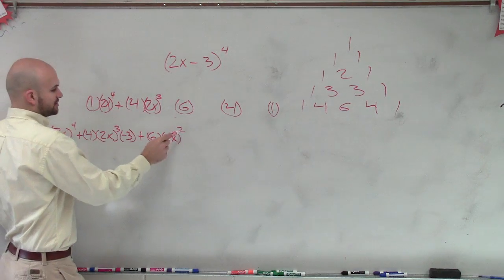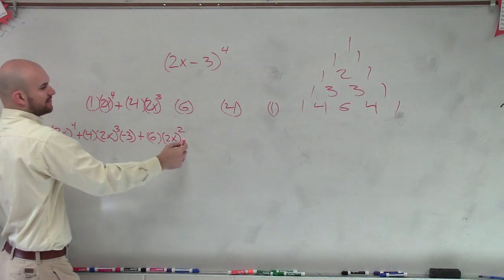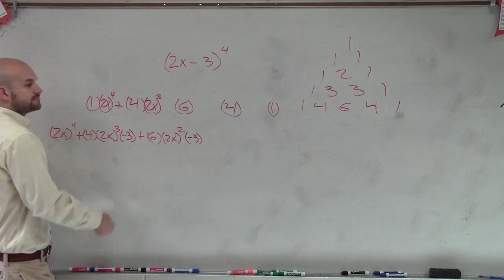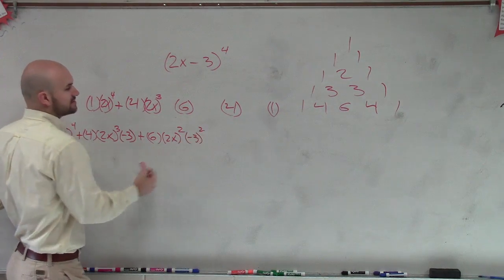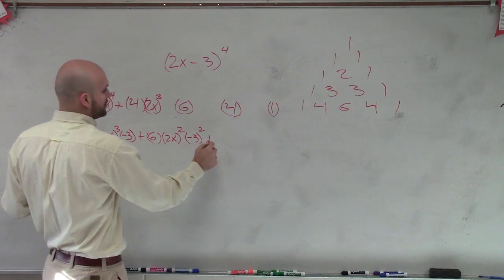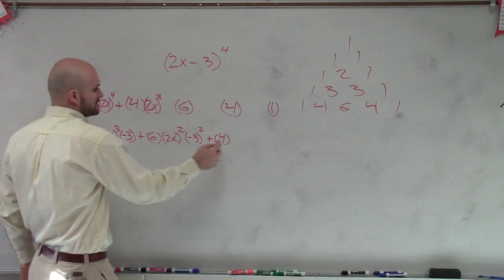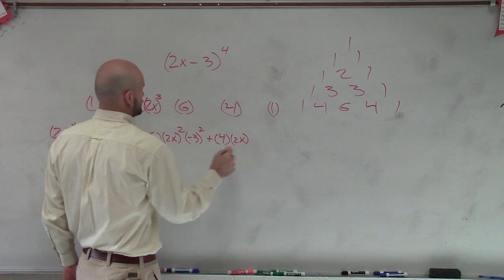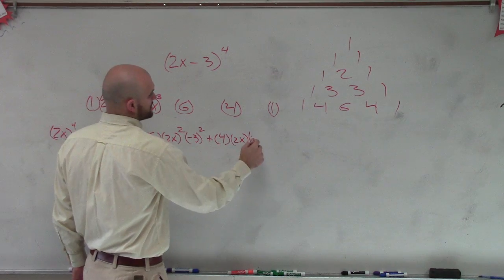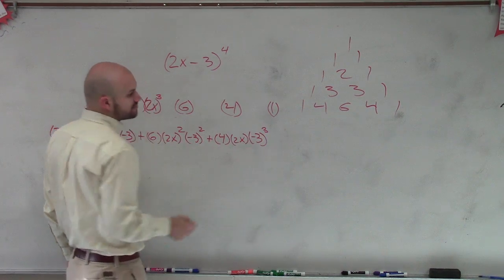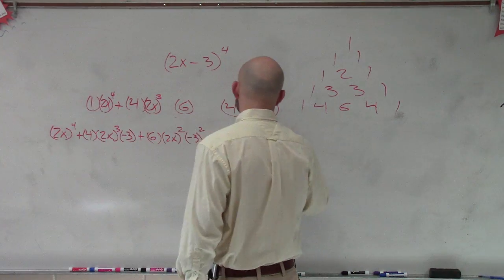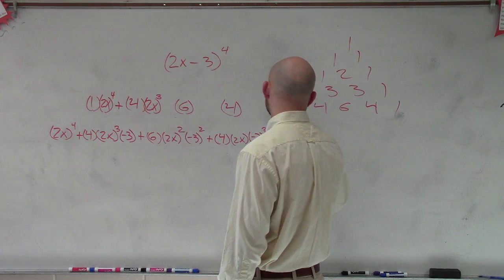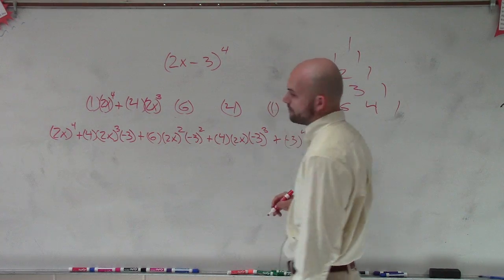So let's go 2x squared, and then my negative 3 gets raised to the second power. Then plus 4 times a 2x to the first times negative 3 cubed. And then plus that's 2x to the 0 times 1 to the negative 3 to the fourth.